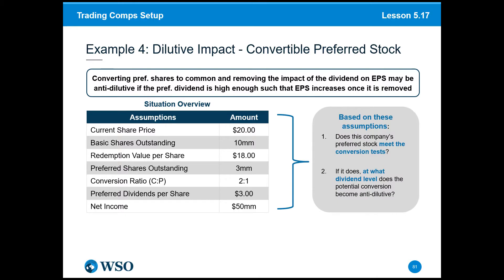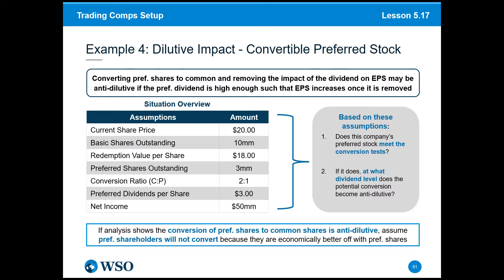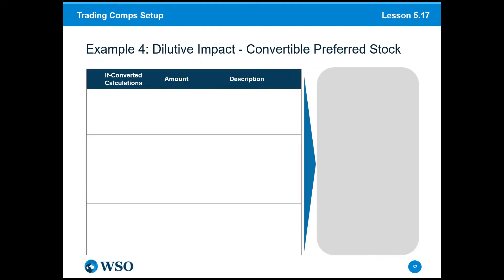Based on these assumptions, we want to figure out: does this company's preferred stock meet the conversion test? And if it does, at what dividend level does the potential conversion become anti-dilutive? In other words, at what point does the dividend level get so high that it just wouldn't convert? If our analysis shows conversion is anti-dilutive, assume preferred shareholders will not convert because they are economically better off with their preferred shares.